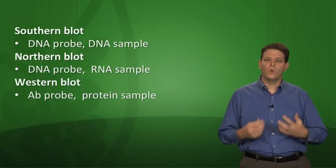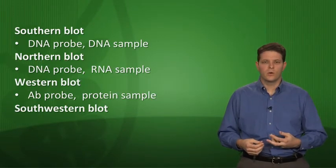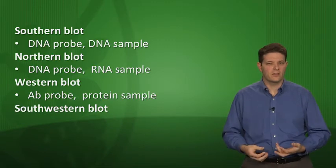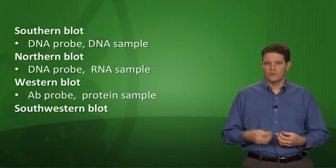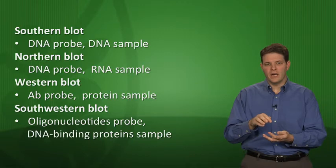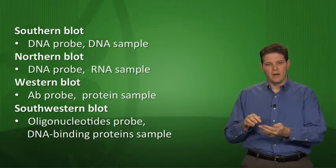Then there's one more blot called a southwestern blot, which is where you're trying to identify transcription factors and other types of DNA binding proteins. So the probe is oligonucleotides and the sample is the DNA binding proteins. If you wanted to determine gene expression, which of these blots would you use? Well, if the gene is being translated and then you're going to look at that protein, you could use a western blot. But if you just wanted to look at the RNA sequence that was transcribed, you would use a northern blot. Basically it all boils down to knowing what the sample is and knowing what the probe is for each of those blotting procedures.